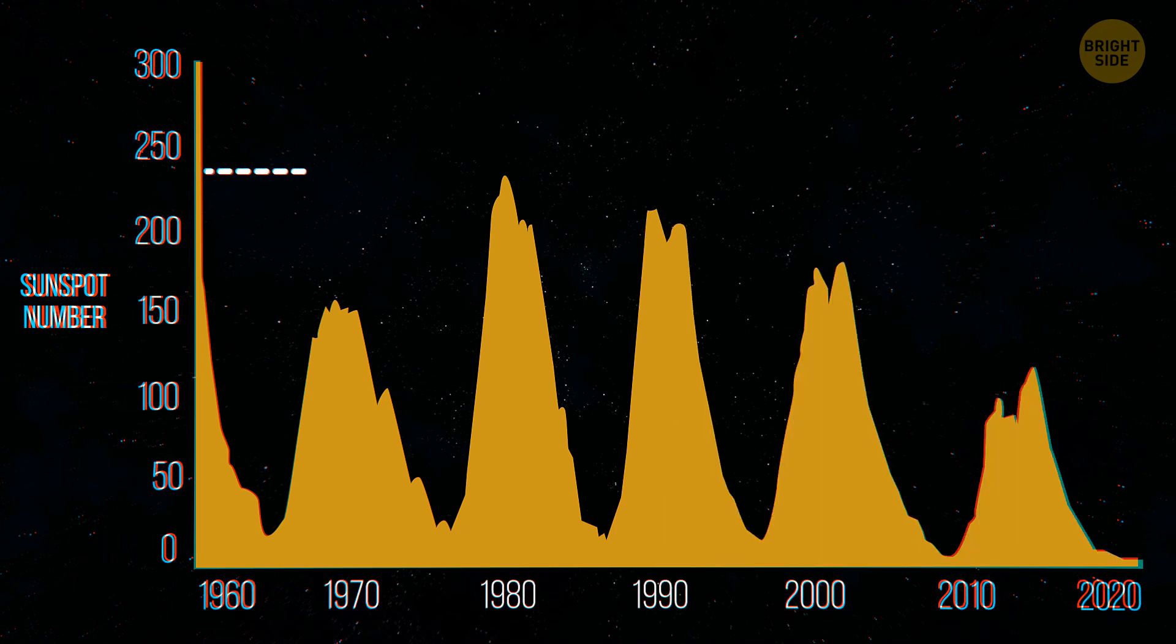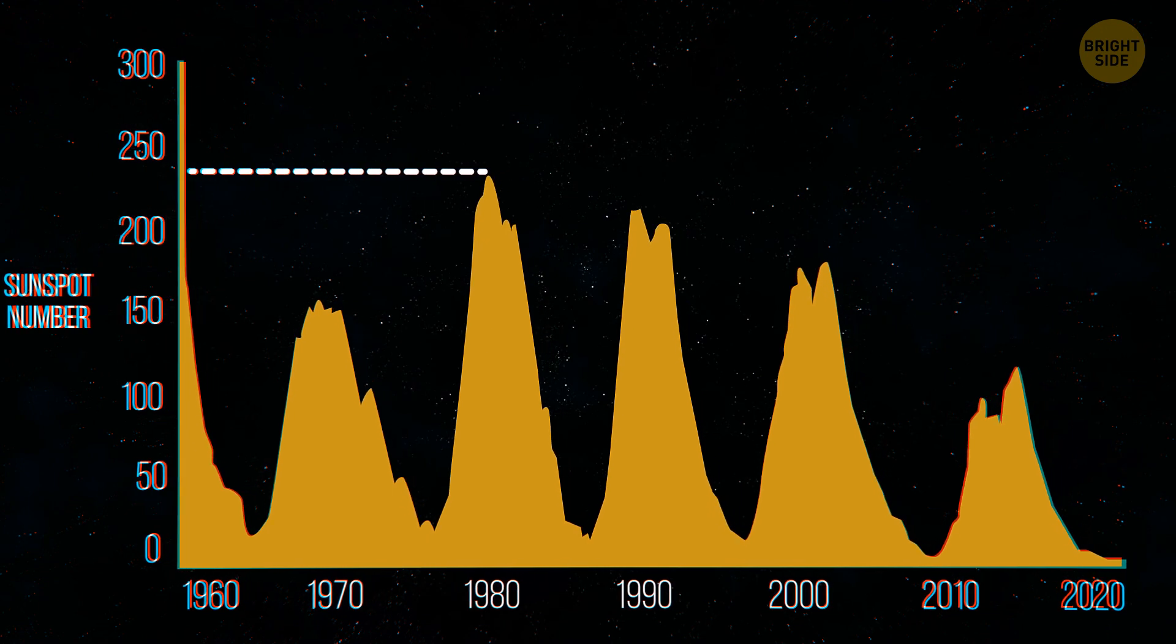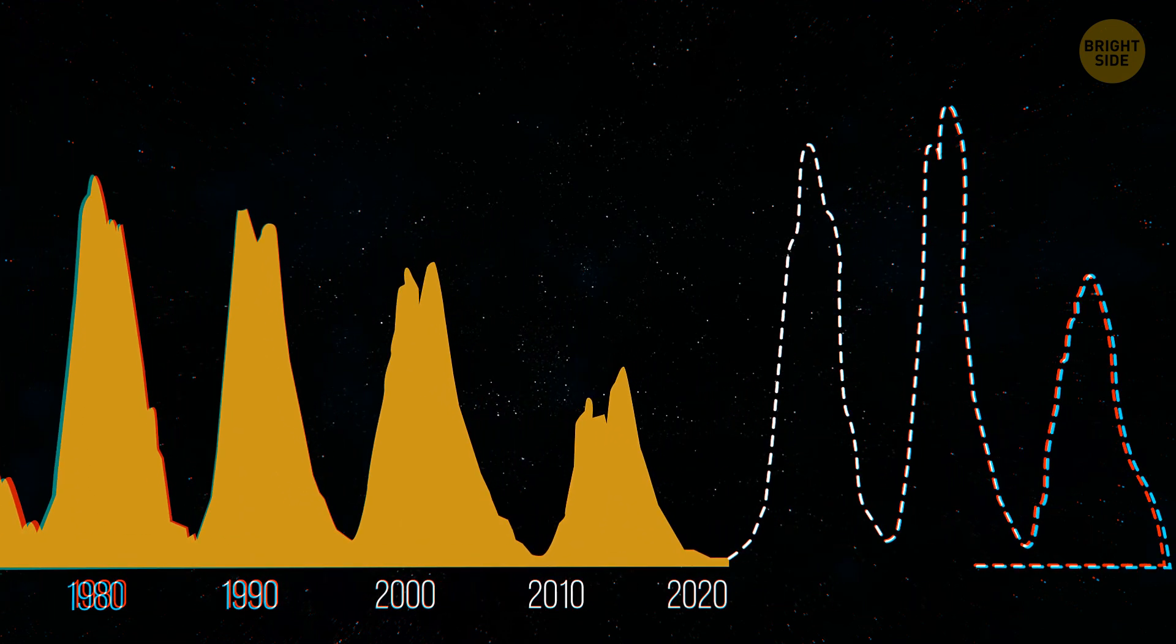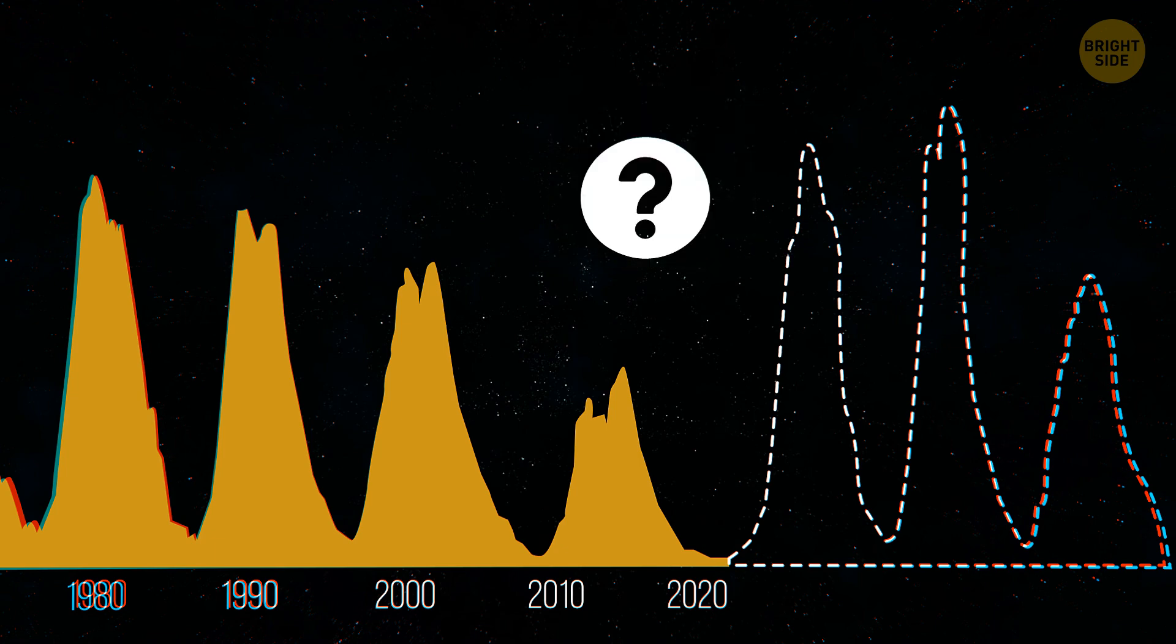The sun has already exceeded the number of sunspots NASA had predicted. So, it doesn't look like this solar cycle is going to be a calm one. It looks like we are going to have some very active sun-blasting radiation on Earth for the next several years.